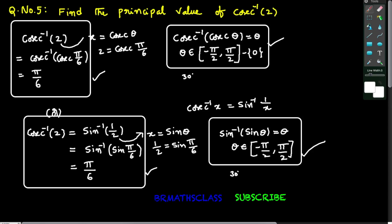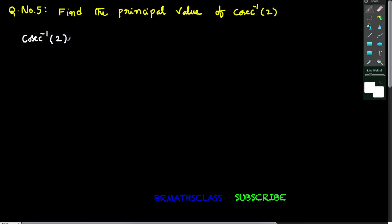Find the principal value of cosecant inverse of 2. In this class, we are going to do this problem in two methods. We need to find the principal value of cosecant inverse of 2.